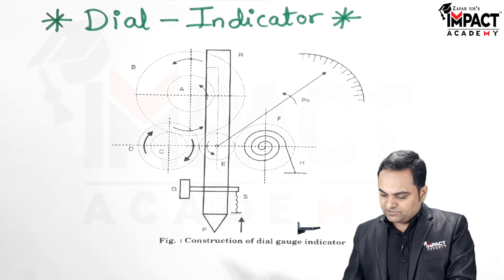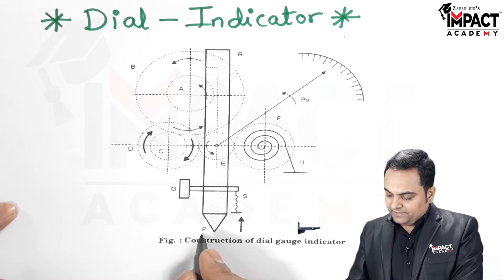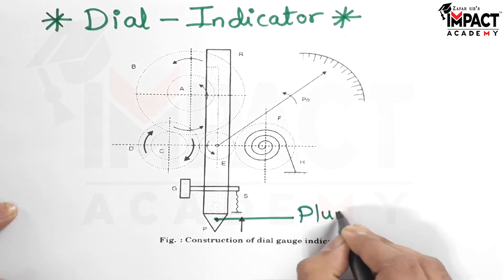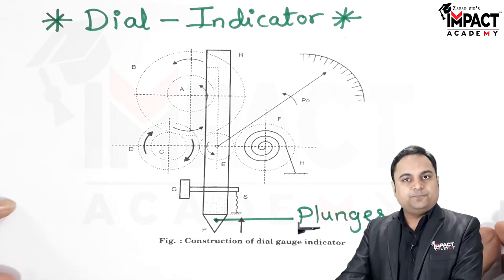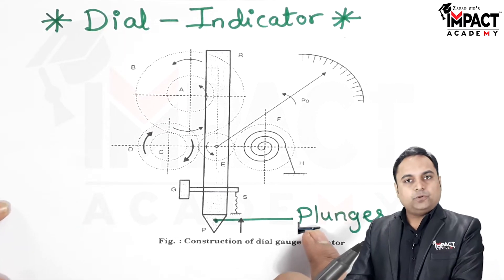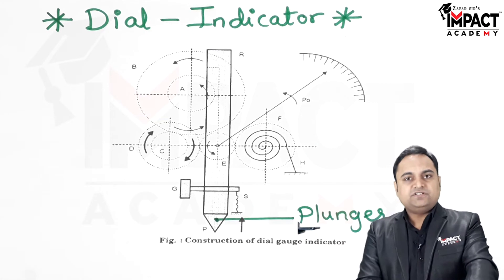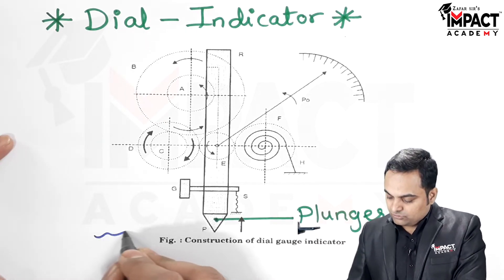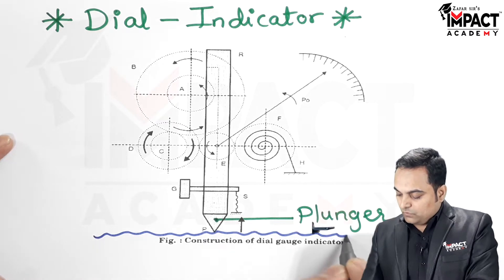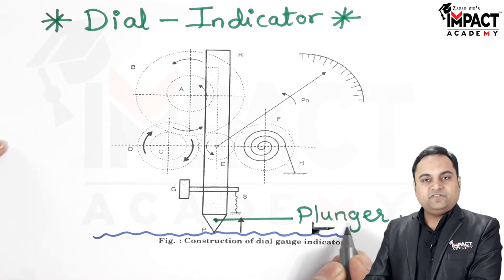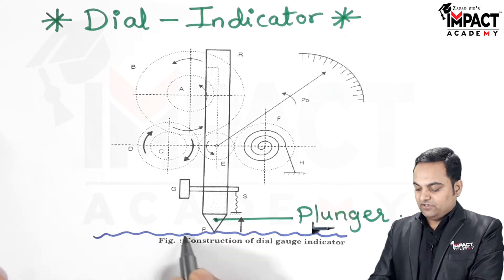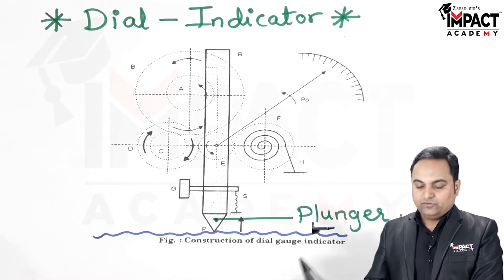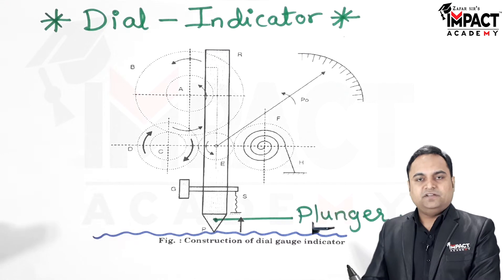The parts will be explained step by step. P indicates the plunger — also called the probe. The plunger or probe is the part which is in contact with the rough surface. Here is the surface whose flatness we have to check, so we are using the dial indicator, a mechanical device which does not require any external power supply.